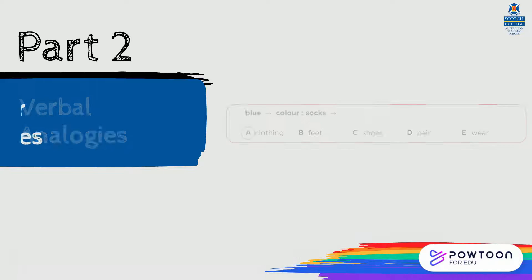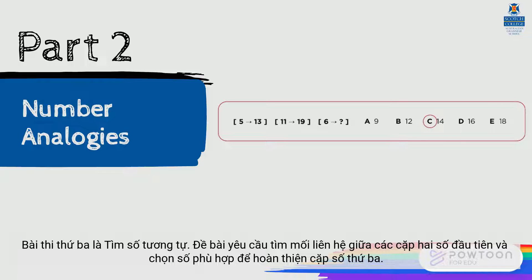The third test in Part 2 is Number Analogies. You will work out how the pair of numbers are related, and then select one answer to complete the third pair.